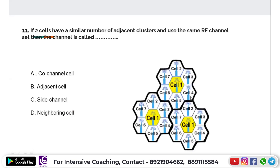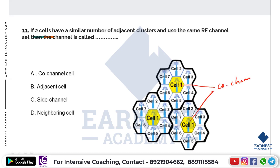Here we have a 7-cell cluster with cells 1 through 7. There are other clusters also using cell 1 with the same frequencies. Cells using the same frequency in different clusters are called co-channels. Co-channels are channels in different clusters which are using the same RF frequency. So the correct answer is co-channel.